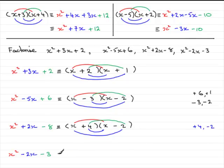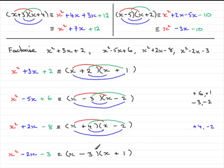One more to go. Again, two brackets with x and x. This one has a minus and a minus. It's going to be minus 3 and plus 1: minus 3 times plus 1 gives minus 3, and minus 3x plus x gives minus 2x. I've also purposely left out the coloured brackets, because you won't want to keep putting them in every time. This is basically what you should aim to write down.